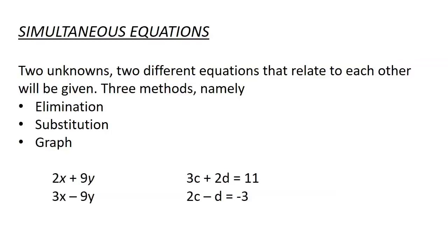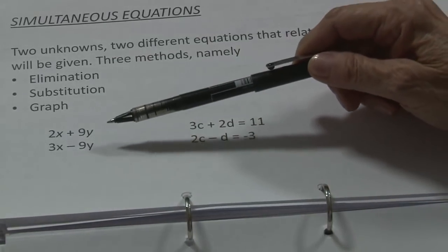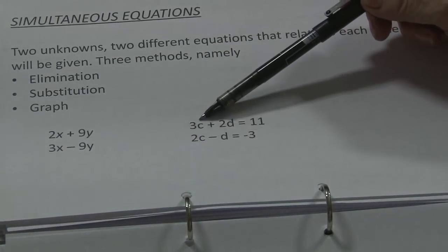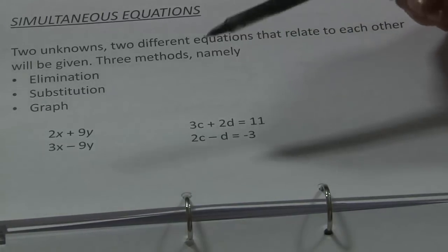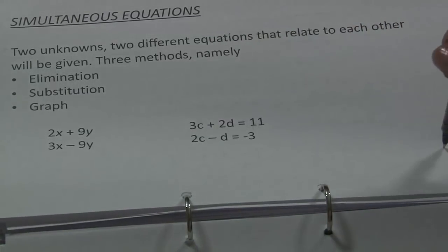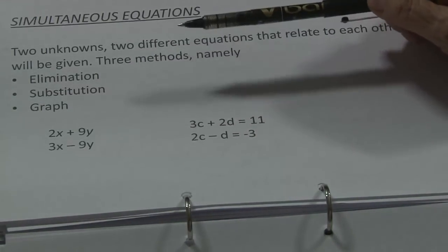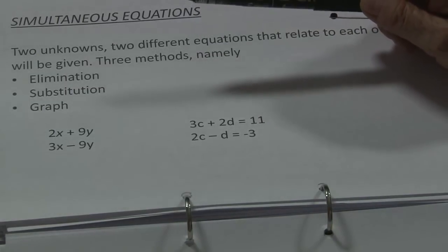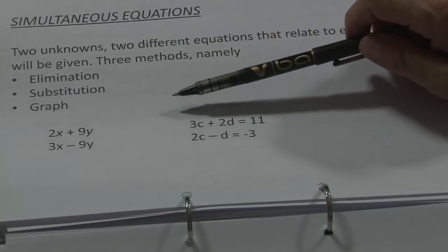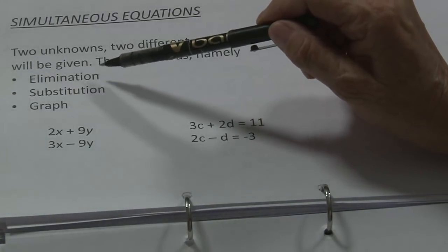The next one: simultaneous equations. Simultaneous equations has two unknowns and you will have to solve both of them. For example, you will have to get the answer for x as well as for y — in this case, for c as well as for d. I'm only going to do one of them. There are three methods to solve it: you can solve this by elimination, by substitution, or by drawing a graph. But I'm going to use elimination.